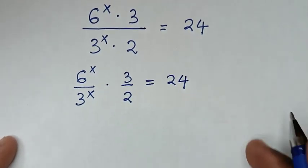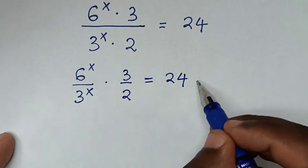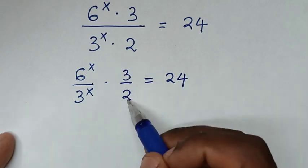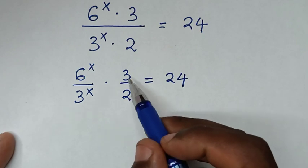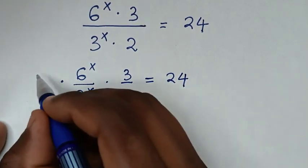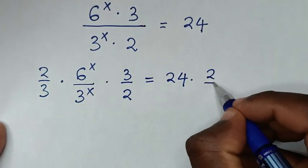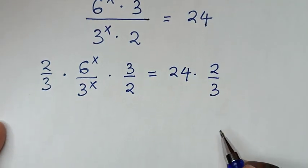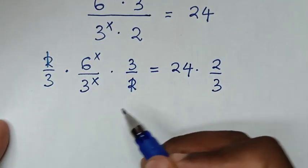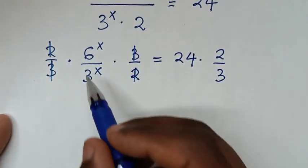Then in the next step we take the number 3 over 2 to the other side by multiplying both sides by its reciprocal, which is 2 over 3. So the 2 cancels with 2 and the 3 cancels with 3.